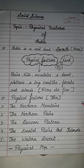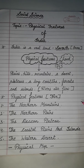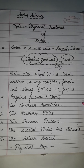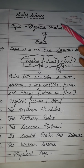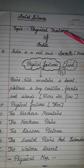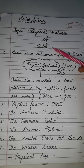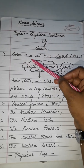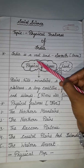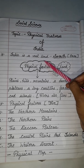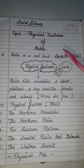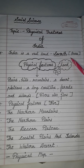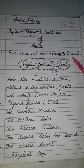Good morning all of you. Myself Nasha Mahan, and here in this video I am going to explain a topic: physical features of India. India is a vast land. It is the seventh largest country of the world in terms of area.